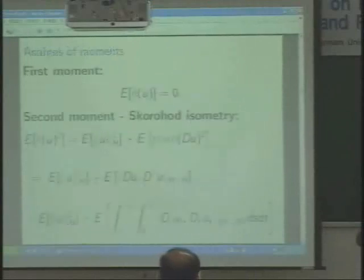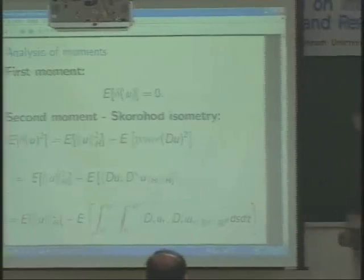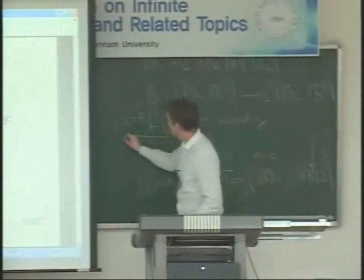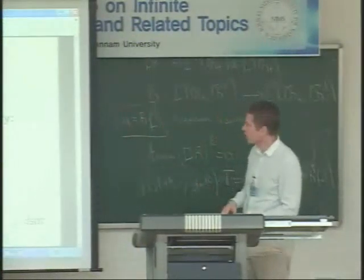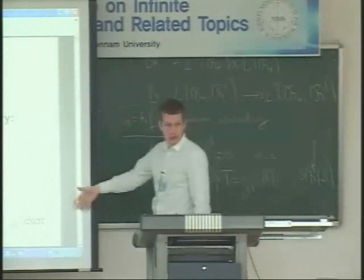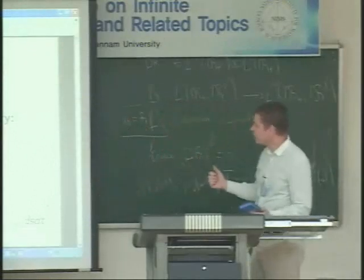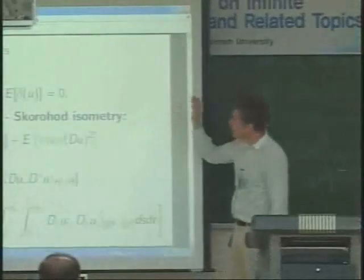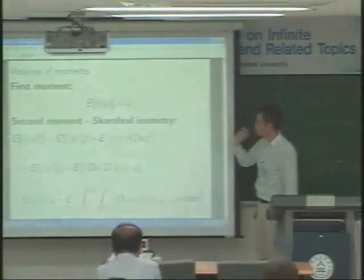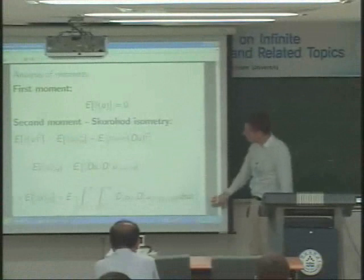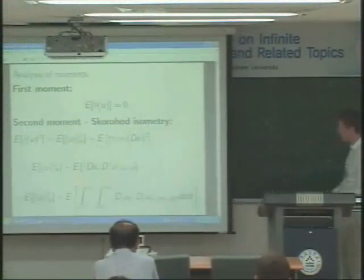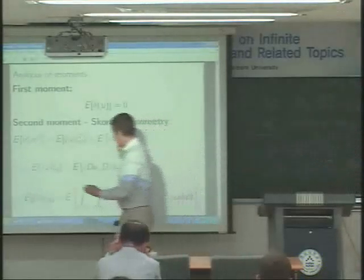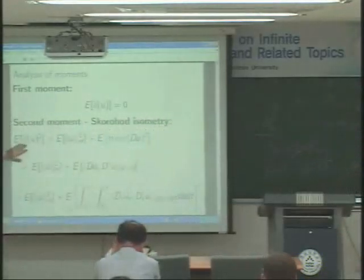How do we prove the Gaussianity of delta(u)? We can let u = r·f and wonder whether delta(u) is a Gaussian random variable. We can look at the moments, because the moments of the Gaussian distribution characterize the distribution. The first moment is always zero for the Skorokhod integral. So delta(u) always has the correct first moment. In order to look at the second moment, we use the Skorokhod isometry. It is known that delta(u) is an extension of the Itô integral.